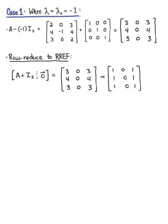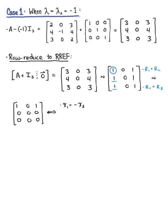Starting at the first pivot position, we eliminate entries below it by multiplying the first row by -1 and adding to the second row, and doing the same with the first and third rows. This leaves us with the matrix [[1, 0, 1], [0, 0, 0], [0, 0, 0]]. We have attained row-reduced echelon form, and we can see that we have two free variables: x sub 2 and x sub 3 are both free, with x sub 1 defined as minus x sub 3.